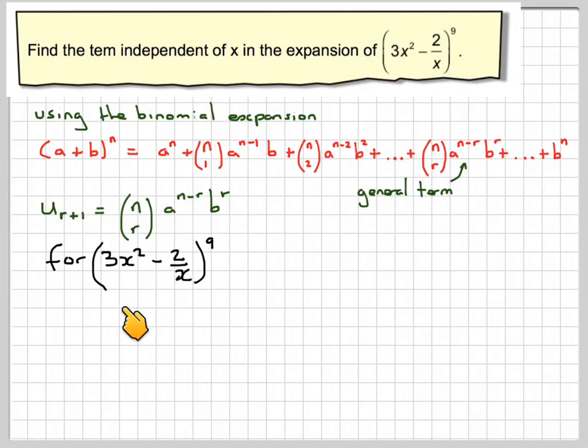So we've got 3x squared minus 2 over x to the 9, so that will give me that n is 9, a is 3x squared, and b is minus 2 over x.